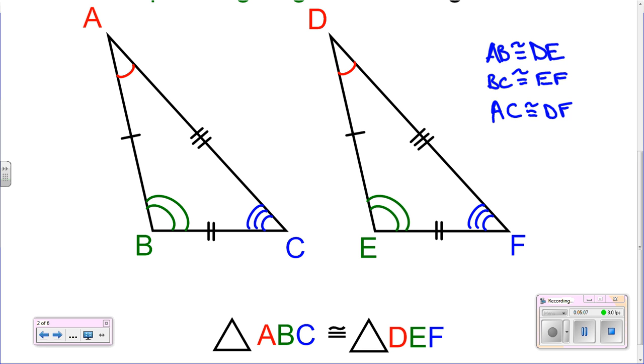But it doesn't just stop with sides, we also know that the angles are congruent too. So we also know that angle A is congruent to angle D, angle B is congruent to angle E, and angle C is congruent to angle F.